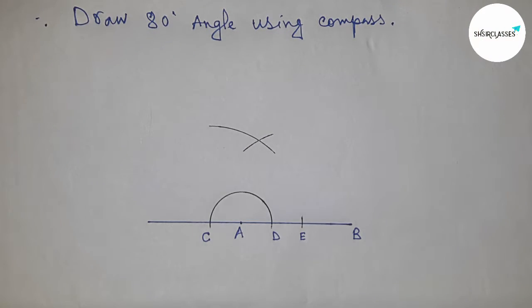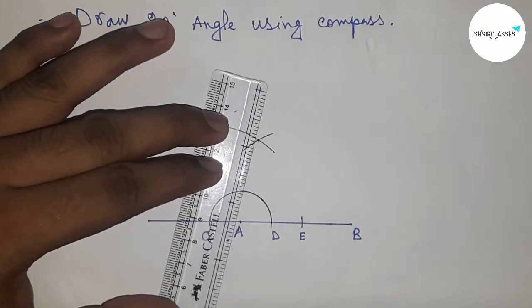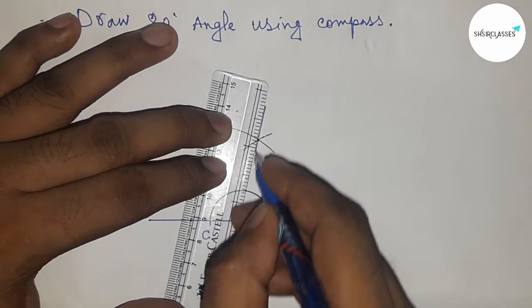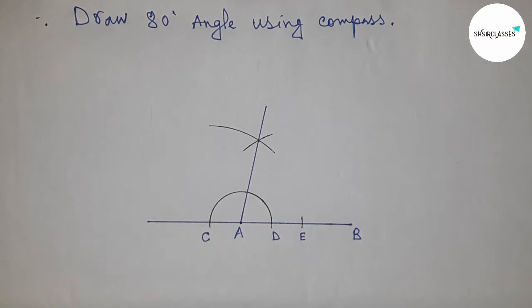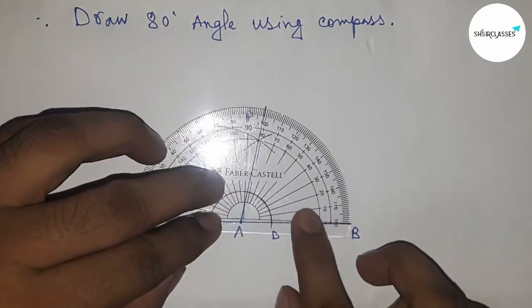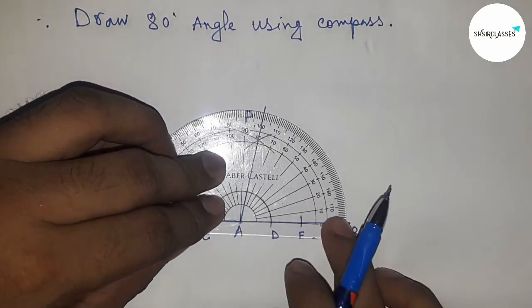Next, join this point and A. So this is point B, so we got angle PAB and it is an 80-degree angle. Next, checking whether it is 80 or not.